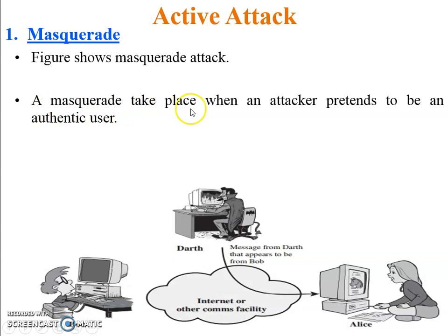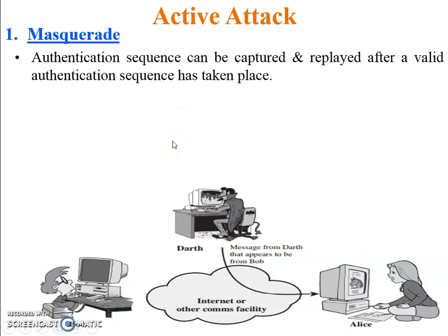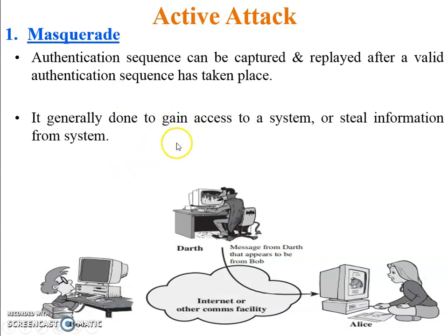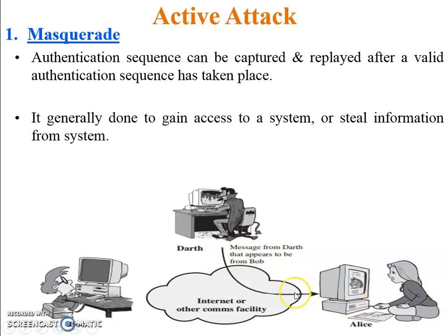A masquerade takes place when an attacker pretends to be an authentic user. The authentic sequence can be captured and replayed after a valid authentication sequence has taken place. It is generally done to gain access to a system or steal information. For example, Darth sends a message, Alice does not know about Darth, but the identity of Darth is shown as Bob. So Alice replies with a confidential message or file, and Darth steals that information from Alice's system.